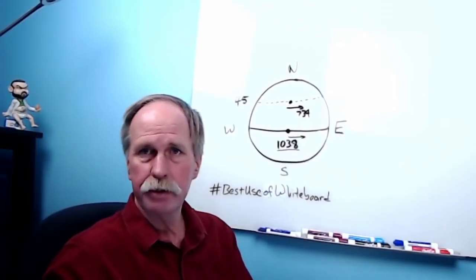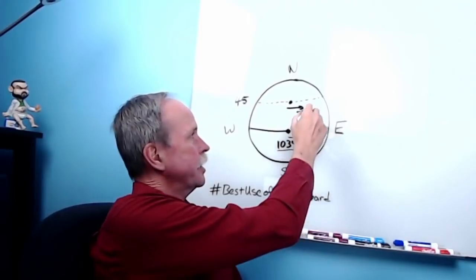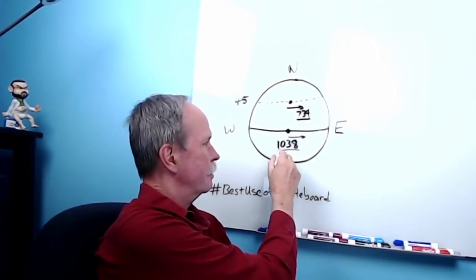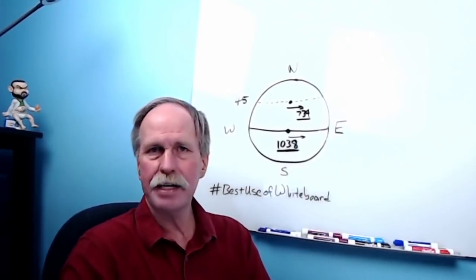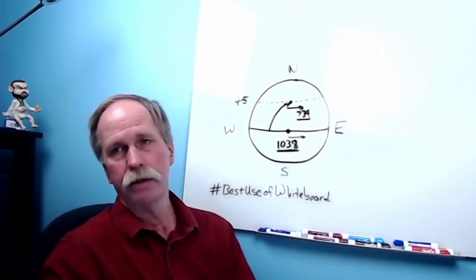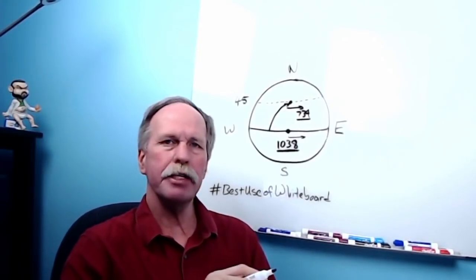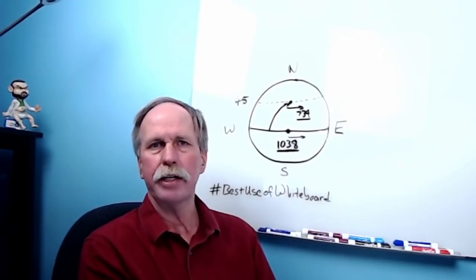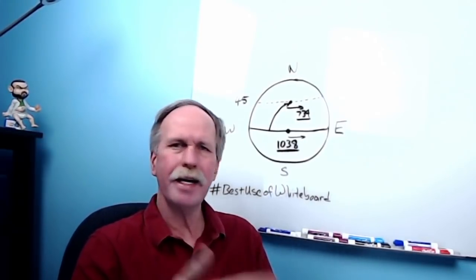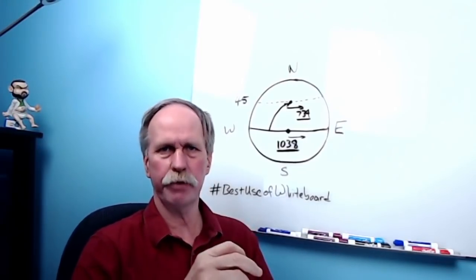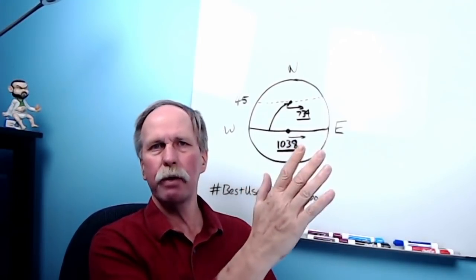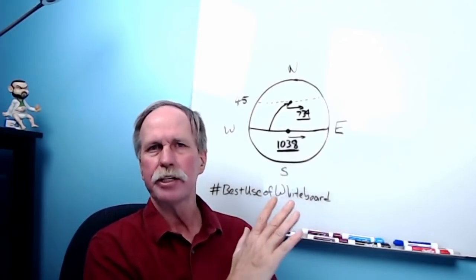By the time you get up to the 45th parallel — say Gaylord, Michigan — the rotation of the Earth at that point is only 734 miles an hour. However, you're still retaining this west-to-east velocity from when you took off at the equator. As a result, your path will curve to the right. In the northern hemisphere, Coriolis causes objects to make a right curve, whether they're going north or south.